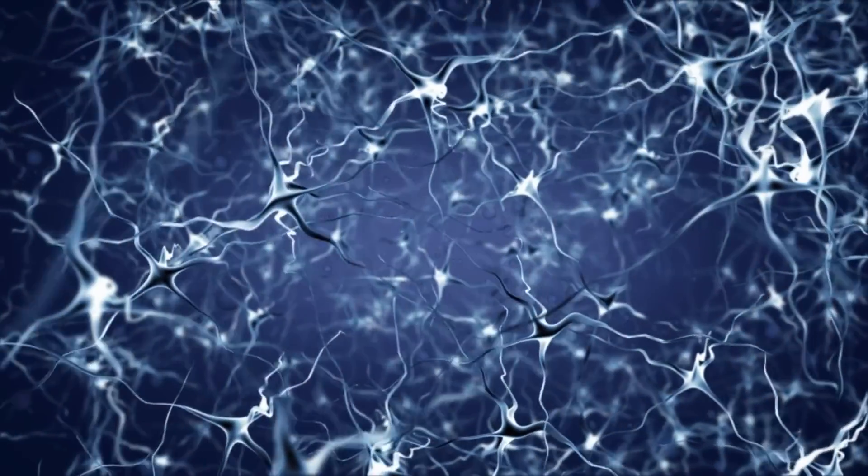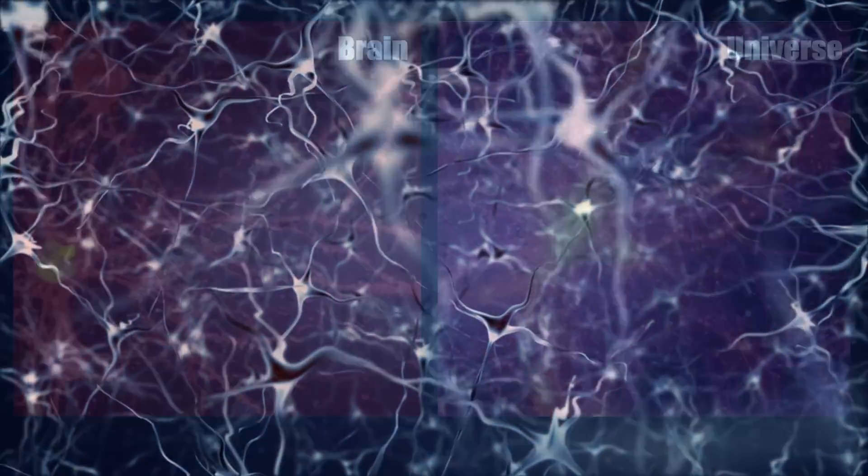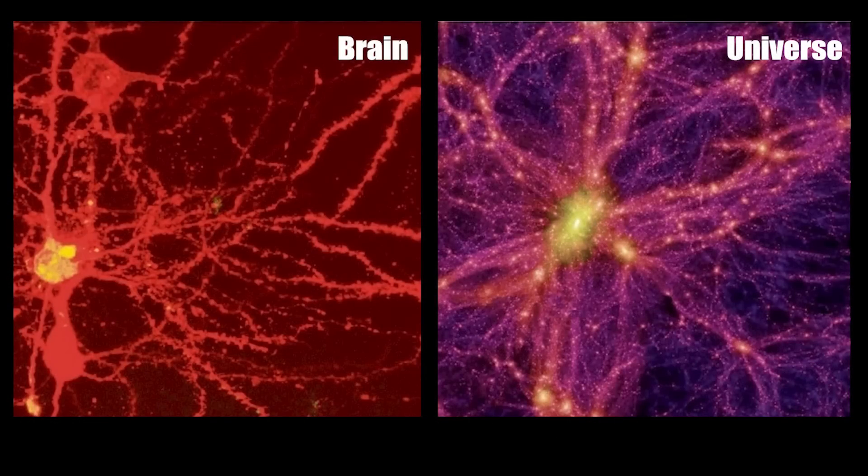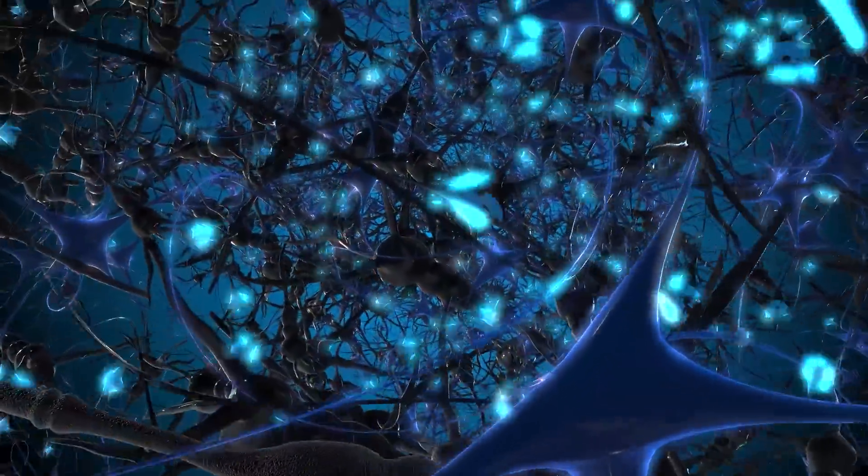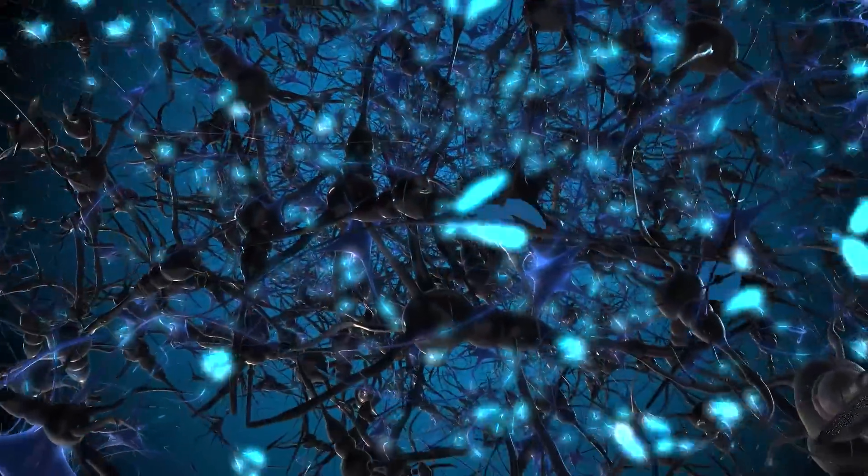Researchers compared images of this cosmic web with a neuronal network formed from brain cells. As you can see here, the structures of the brain and the universe are very close. However, this by itself doesn't prove that the universe and the brain are structurally similar.